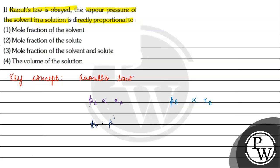We have a vapor pressure of pure solvent A or pure component A. pb can be written as: pb is equal to p-not-b times chi-b. Now, if we talk about the vapor pressure of a solvent in a solution, ek solvent ka jo vapor pressure hoga, woh kispe depend karega? Woh basically hummare paas depend karega mole fraction of the solvent itself.